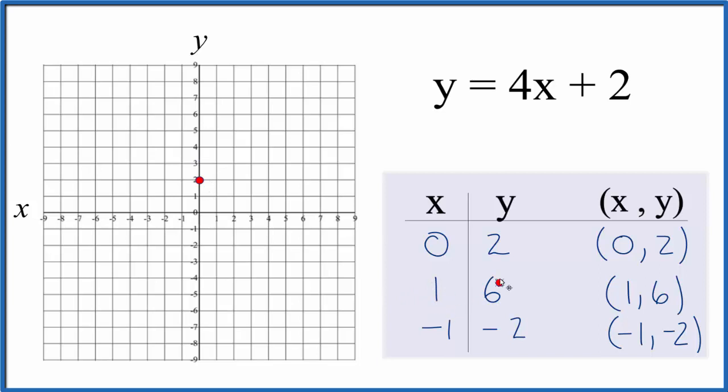Then we have 1 for x and 6 for y. So we go x is 1, and we go up to 6 for y. And finally we have negative 1 for x and negative 2 for y.